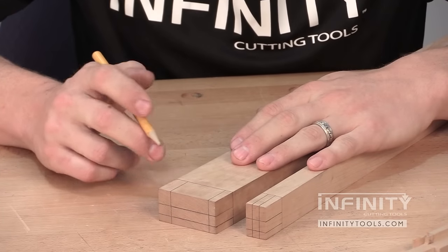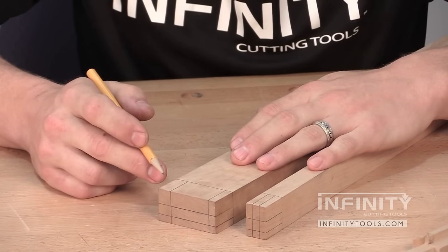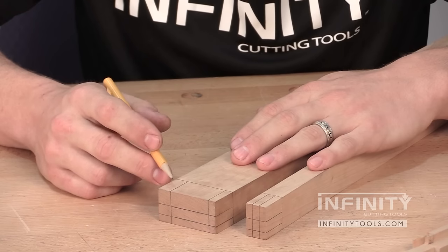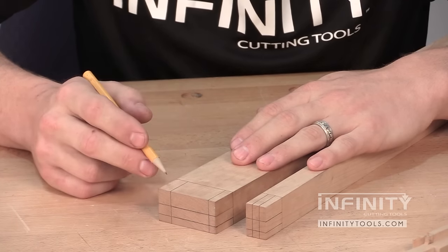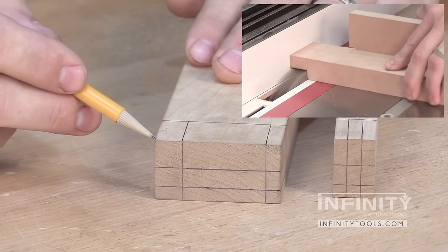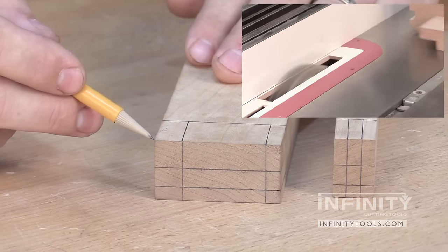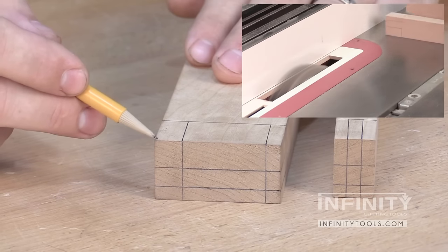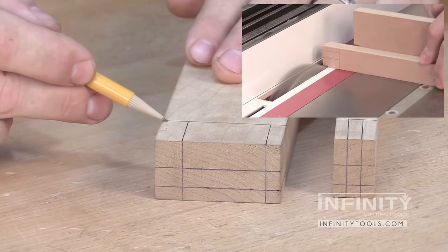I've laid out the cuts that we need to make to expose the tenons on the ends of one of my rails and muttons. For the top cut, to expose the top of the tenon, I'm going to make a cut at the table saw using a dado blade, between one half of an inch deep and one inch wide.